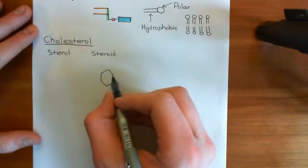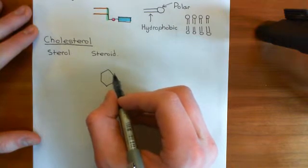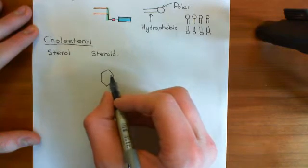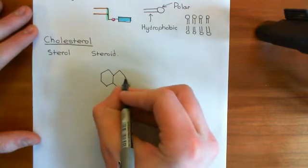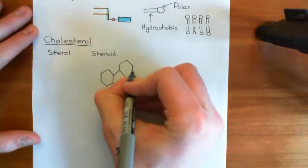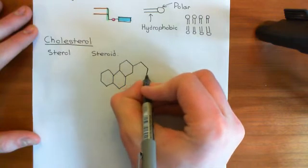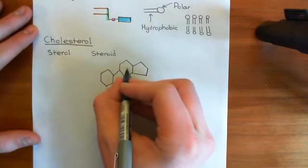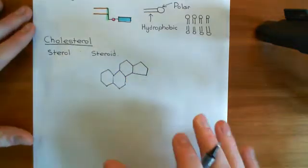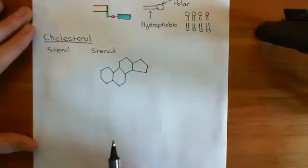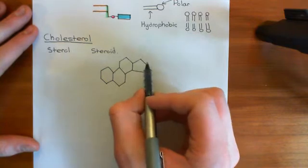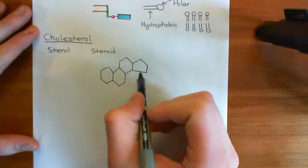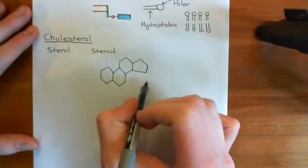In skeletal formula we don't show carbon atoms — they're implicitly shown by corners and meeting points of bonds — and we don't show hydrogen atoms coming off carbon atoms; wherever carbons don't have enough bonds, the remaining spare bonds are assumed to be to hydrogen atoms. All steroid molecules have these four rings joined together: a six-membered ring, another six-membered ring, a third six-membered ring, and then a five-membered ring on the end. This characteristic structure is just carbon and hydrogen.